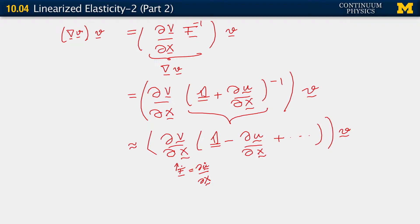In order to maintain only the first-order terms, we should have just partial of v with respect to x, acting on v. Now, this term is indeed first order in the displacement gradient, because this is just partial of u-dot with respect to x. However, this term is not linear in the velocities anymore — we get a term that is quadratic.